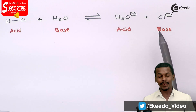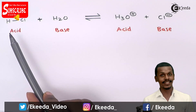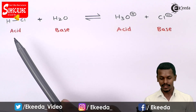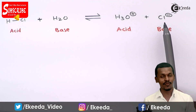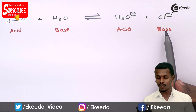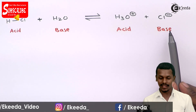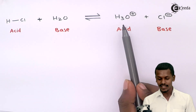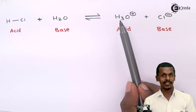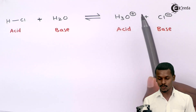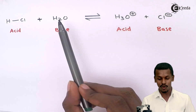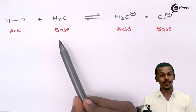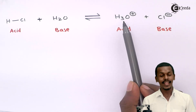We can see that the base Cl⁻ was formed because of the acid HCl — by removing H⁺ from HCl, a base is formed. So Cl⁻ is the conjugate base of the acid HCl. Similarly, if H₃O⁺ donates its H⁺ ion to Cl⁻, it forms H₂O. So H₂O is the conjugate base of the acid H₃O⁺.